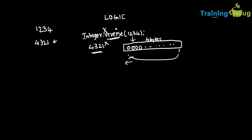Most freshers will get confused with the reverse method. Even in an interview, if they ask you about the reverse method — the reverse method always gives you the 2's complement of the reversed binary representation, which is not actually the reverse of a number. Rather, it is a reversal of the 0s and 1s.